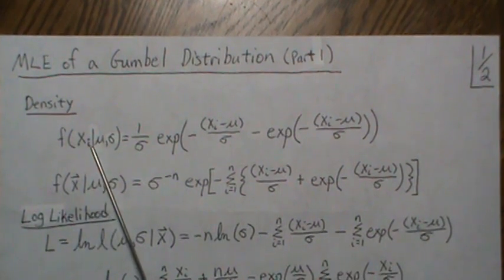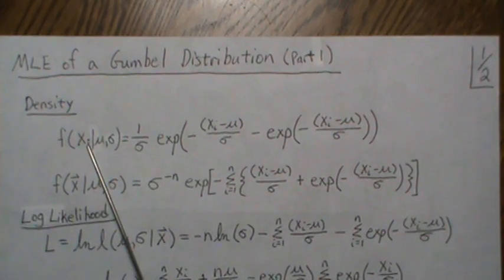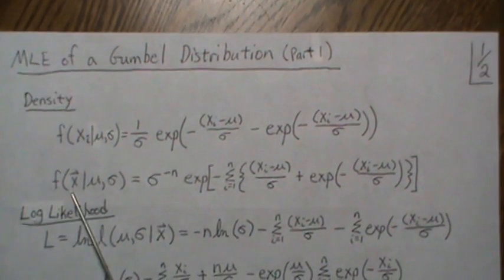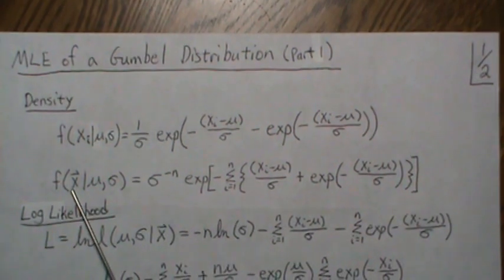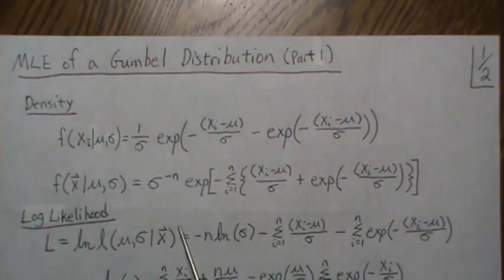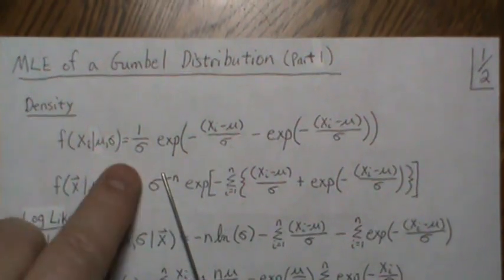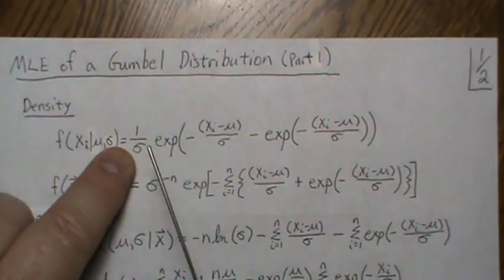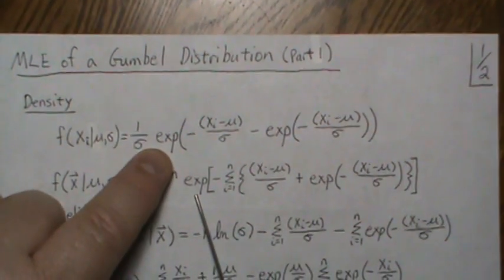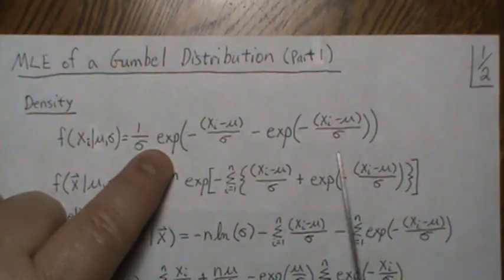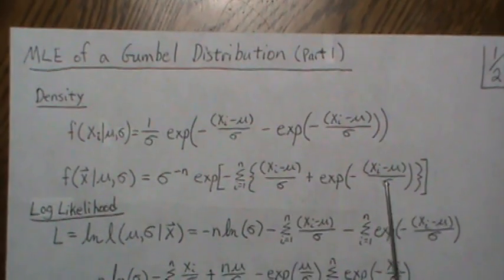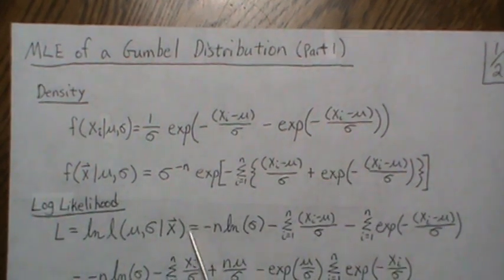That density formula is for a single data point, but to create the likelihood we need a sample. We take a sample of size n — a vector of size n — and since the observations are all independent, the joint density is the product of the individual densities. The reciprocal of σ is raised to the nth power, and since this is an exponential we end up summing the exponents.